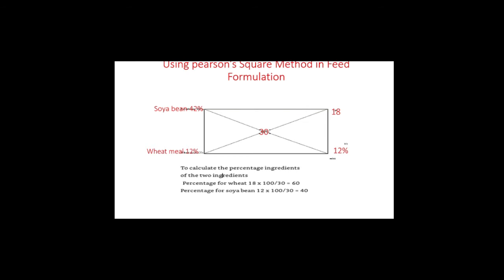If we still get the number that is in the middle of the square, then we are right. That is to say, if we do the subtraction and add the results and still get 30, we are doing the right thing. For soybean with 42% crude protein: 42 minus 30 gives minus 12 — ignore the minus sign, so we have 12. For wheat meal with 12% crude protein: 30 minus 12 gives 18. When you sum 18 plus 12 you get 30, which confirms we are correct.